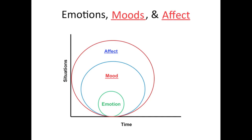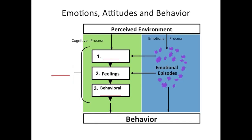So we've arranged emotion, mood, and affect on two axes — one associated with amount of time and the other with number of situations. Now let's explore the relationship between emotions, attitudes, and behaviors. Attitudes have three different components: beliefs, feelings, and behavioral intentions. Each of these three components is really important.